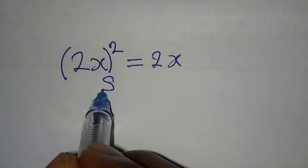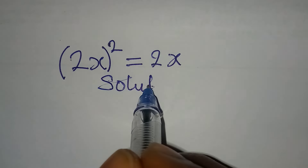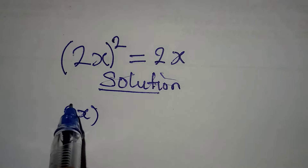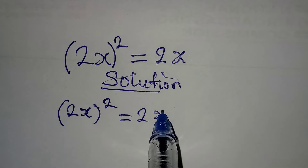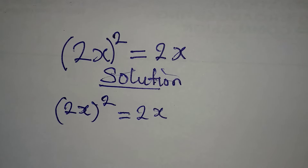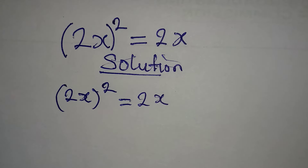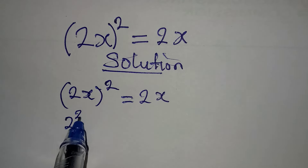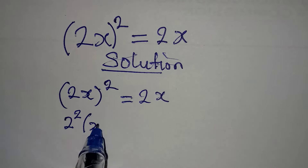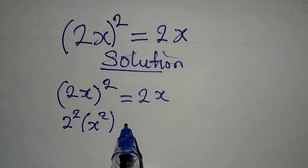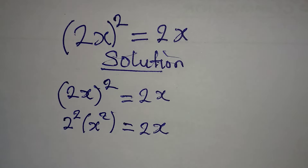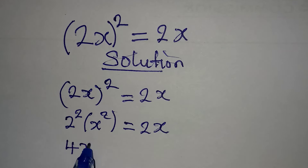Let's solve this problem very quickly. We have 2x squared equal to 2x. Now 2x squared means 2 squared times x squared, and it's equal to 2x. Both sides have the power of 2, so this is the same as 4x squared equals 2x.